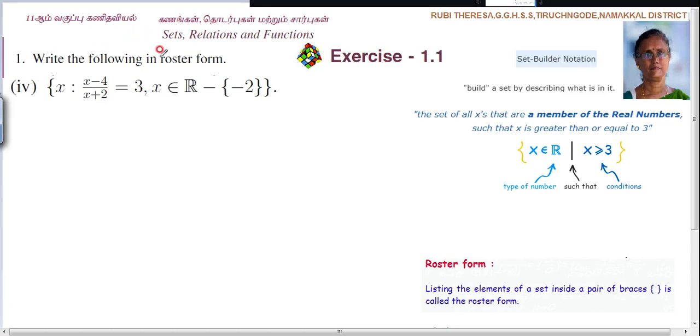Write the following in roster form. I've already explained what is meant by roster form. Listing the elements of a set inside a pair of braces is called roster form. That is listing out the elements within the curly brackets. The elements are separated by commas.